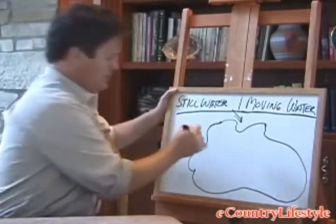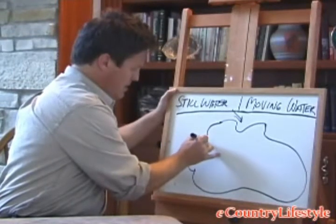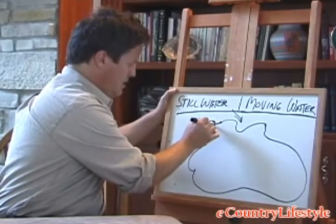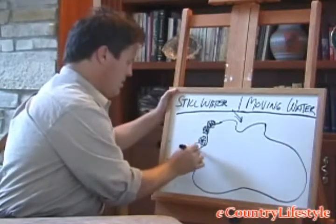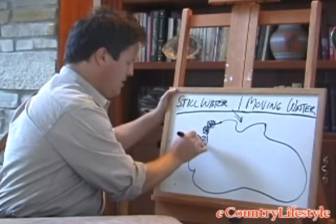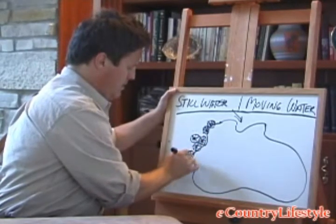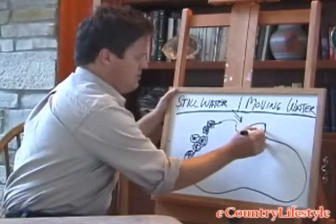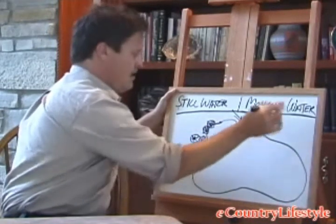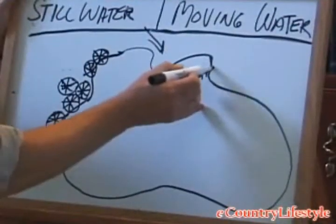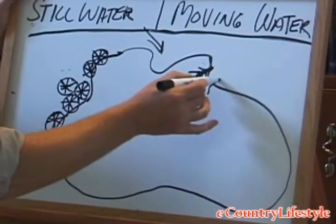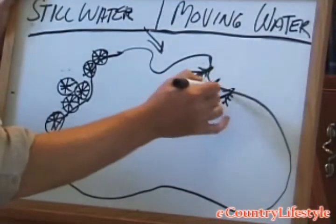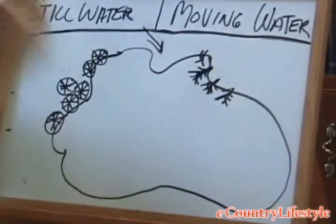Now I'm going to make some simple symbols here. These will signify trees — more specifically, trees close to shore. We'll just put a little grove or a little concentration of trees in here. A typical lake will have some deadfalls — trees like these that have died off and fallen right into the water.